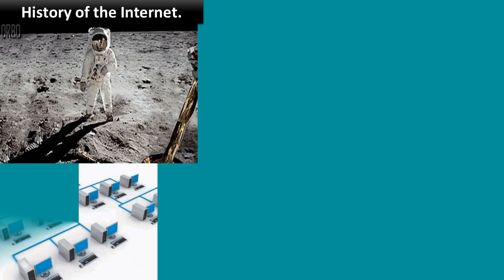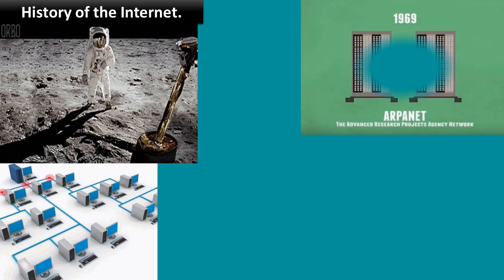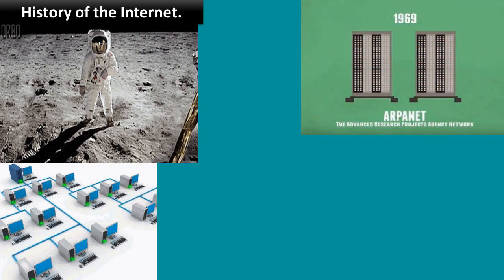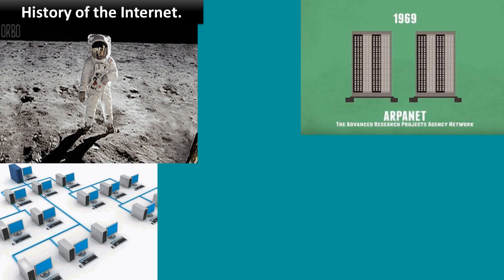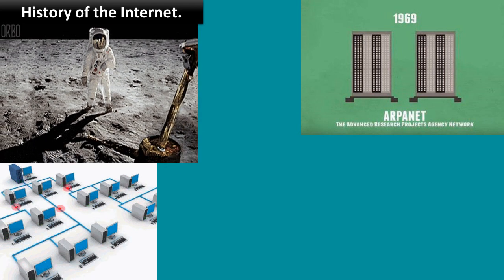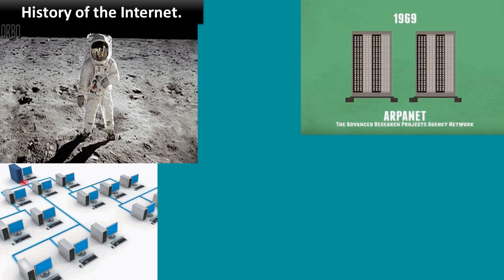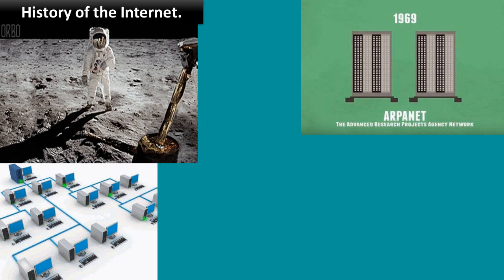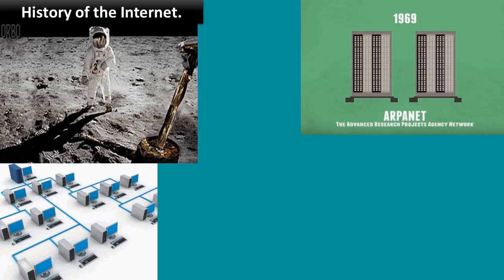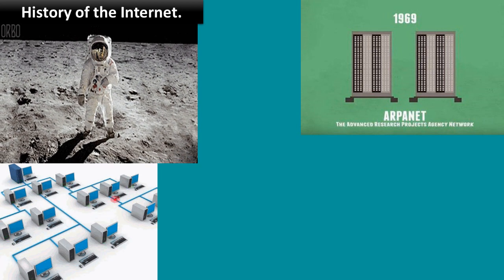They designed a network of four computers to exchange and share their data. This network was called ARPANET, that is, Advanced Research Project Agency Network. Later, many universities were allowed to join this network and share information. This was the beginning of networking of computers, which grew bigger day by day and gave birth to the internet.